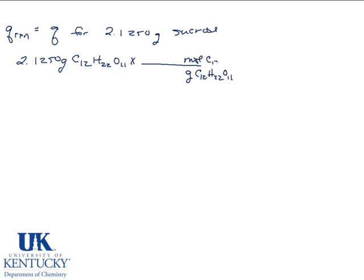So let's convert the 2.1250 grams of C12H22O11 to moles. We'll need the molar mass of the sucrose. The molar mass of sucrose is 342.299 grams per mole. So this is how many grams we have. This will convert it to moles.